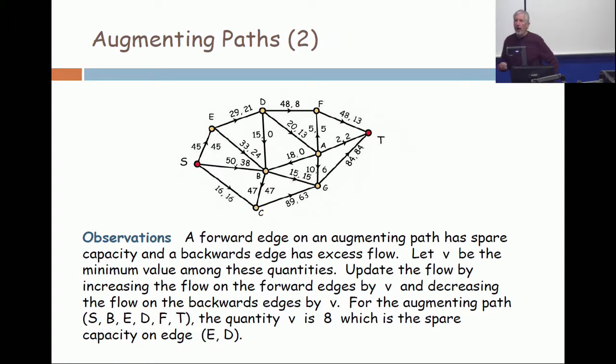Let that be the minimum among all of the computations for spare capacity and excess flow. Then you modify the flow with the changes made only along the augmenting path. You increase the flow on forward edges by this minimum quantity and decrease the flow on the backwards edge by this same quantity. When you do that, the conservation laws are preserved for free and the value of your overall flow goes up by this quantity V.